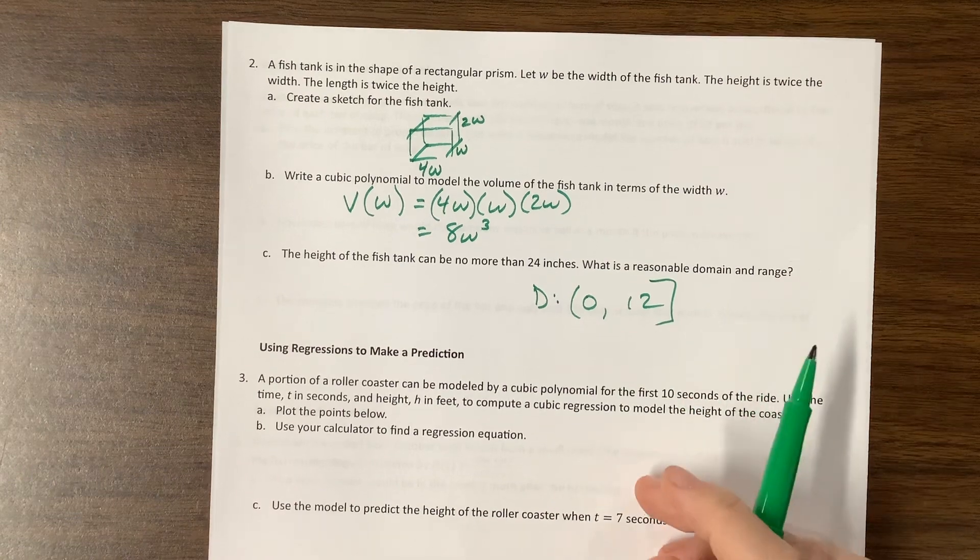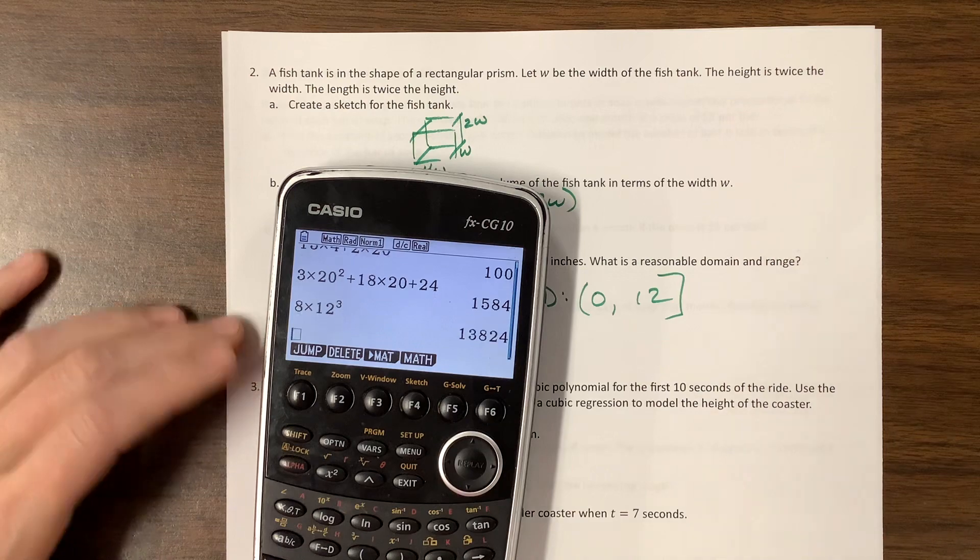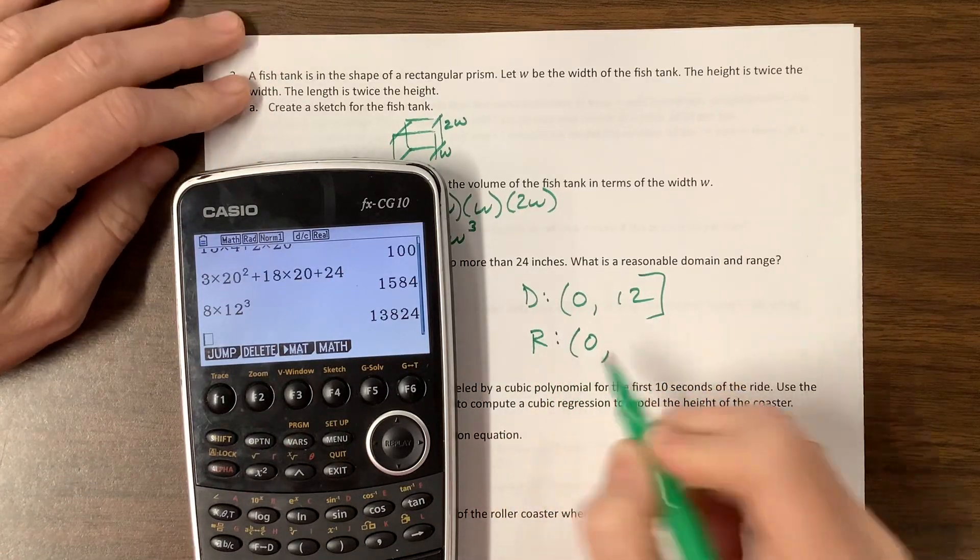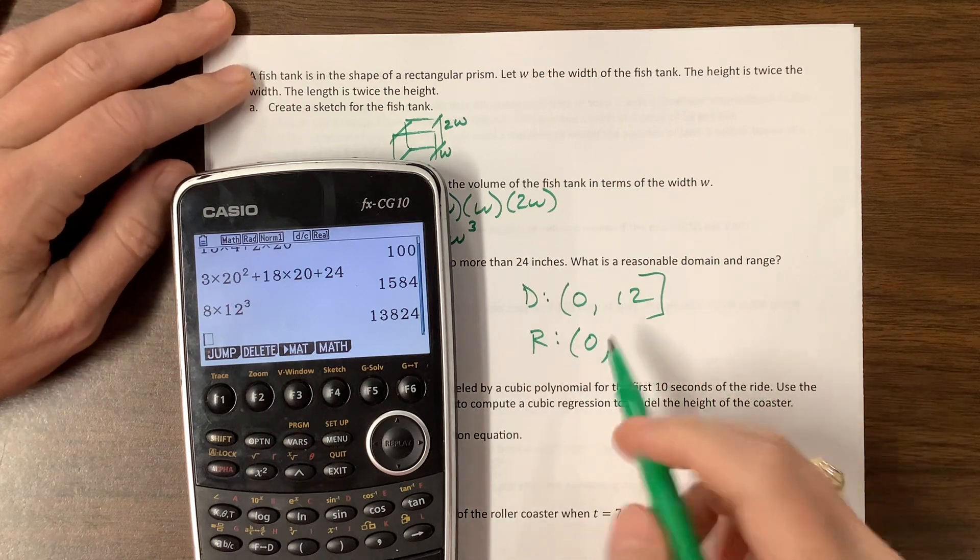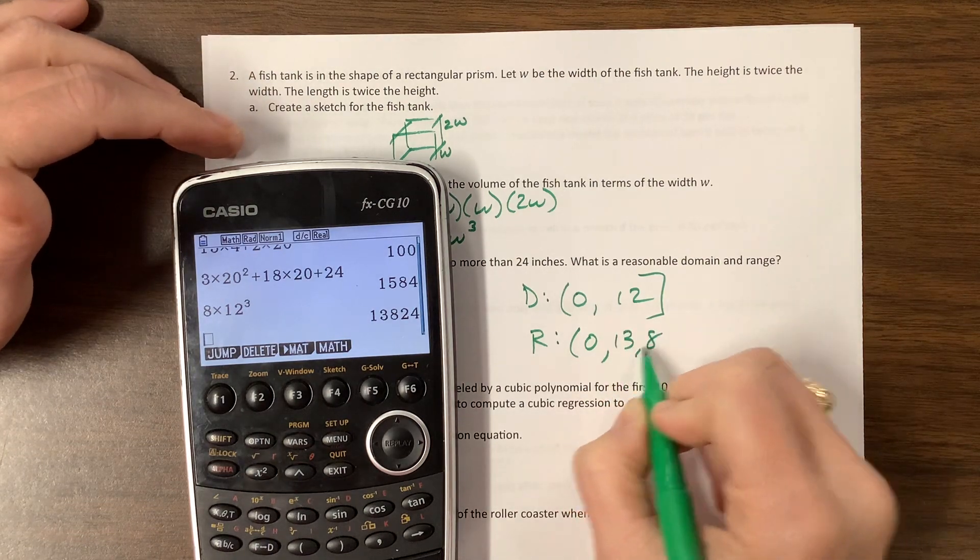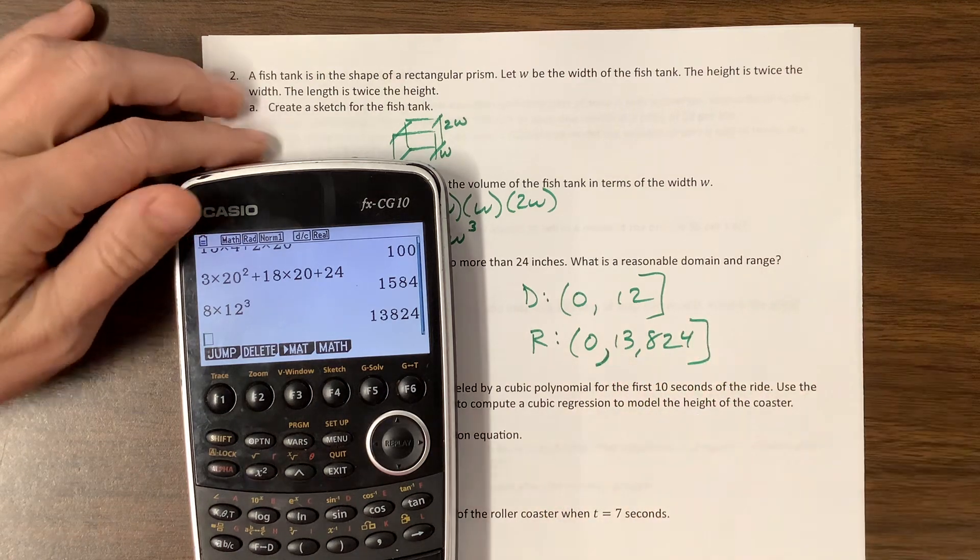And then if I plug this in, my 8 times 12 cubed, I get something like this for the range. So it doesn't make sense to have a fish tank with a volume of 0, but that's... I don't know why I put the comma. I have extra commas. Anyway, there you go. Something like that.